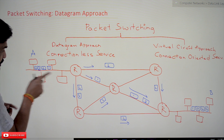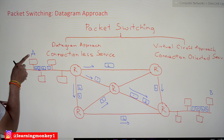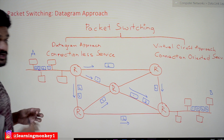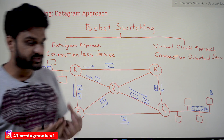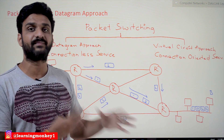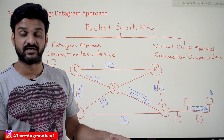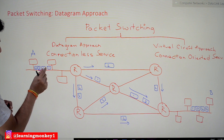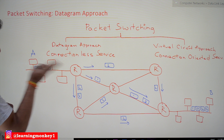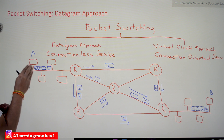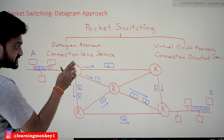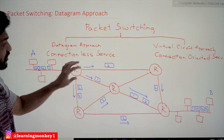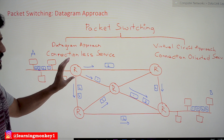Here we understand this with source A and destination B. The source system continuously generates packets to be transmitted. Assume packets 1, 2, 3, and 4 are generated by A and received at the default router.